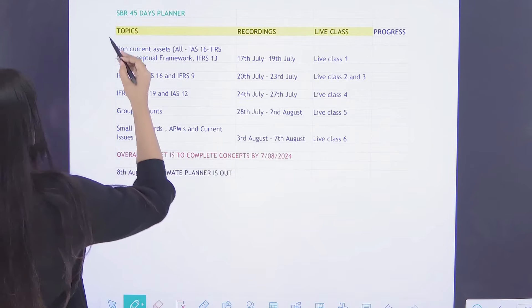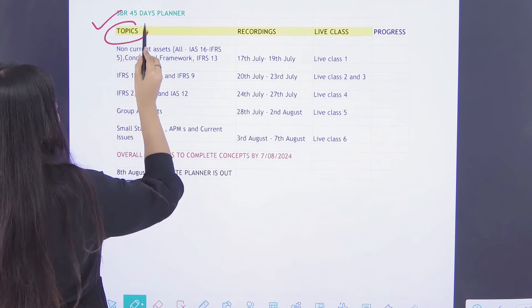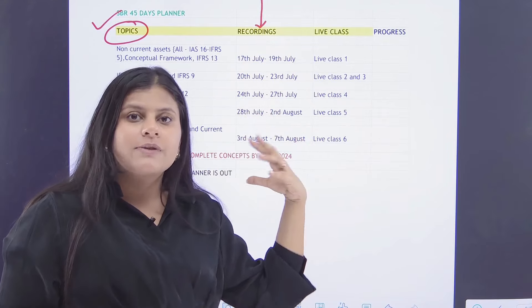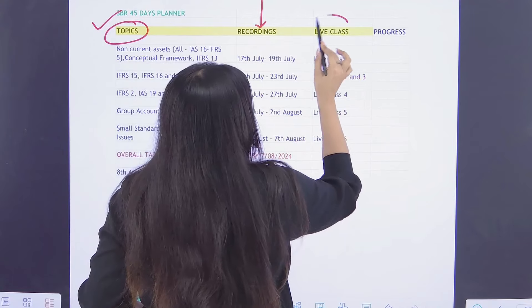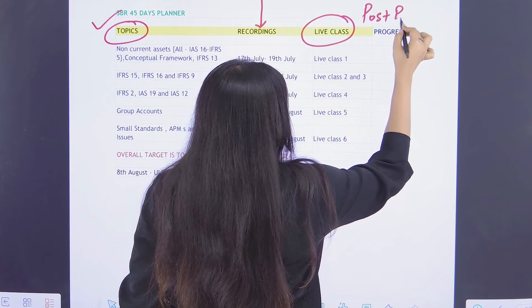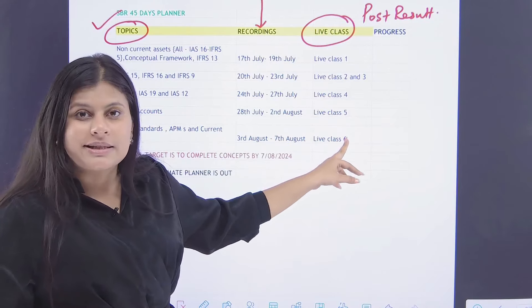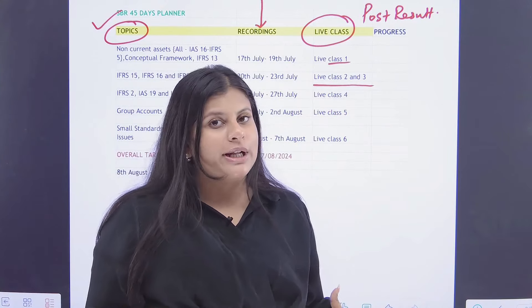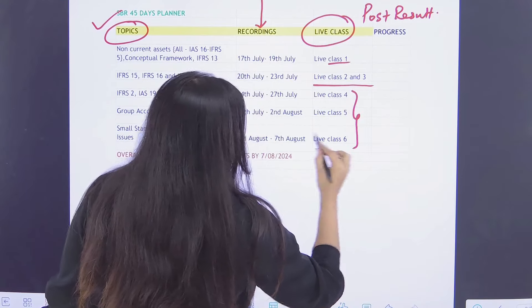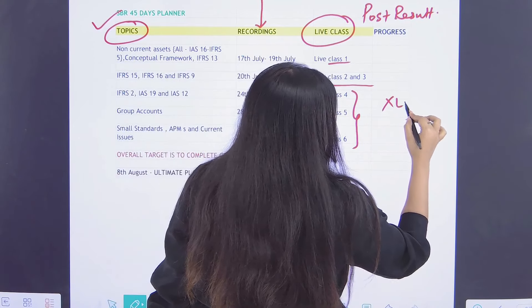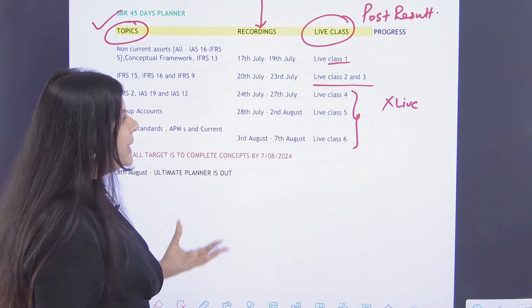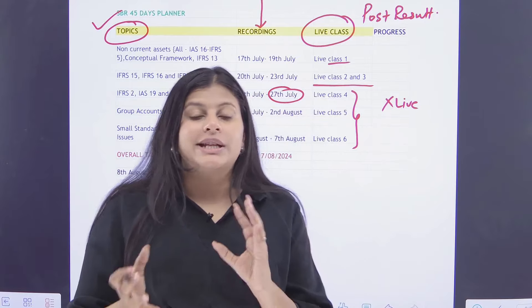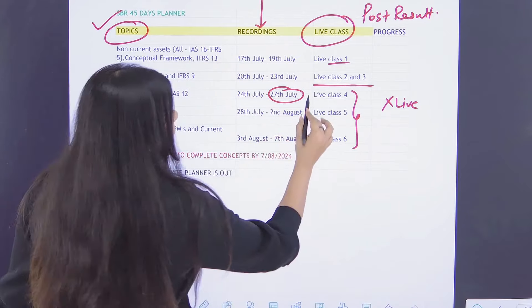So here is the plan, SBR 45 days plan. Here I've given you the topics, which topics you have to complete. Recordings means my paid students, the post result batch students, will be referring to the recordings of these relevant topics from the portal on these dates. Live class - all the people who are enrolling in post result batch, you guys have the option to watch the recording of these classes. Three live classes have already taken place. You will obviously have to watch the recording of this, which will be made available on the portal itself. These three classes are yet to happen, but as per this plan, you won't be able to watch them live because live class number four is going to happen on this coming weekend. But you will be done with the syllabus by 27th of July, which is next to next weekend.